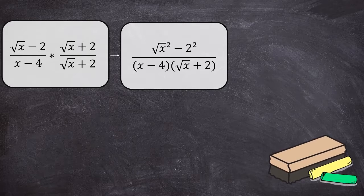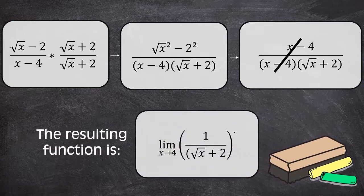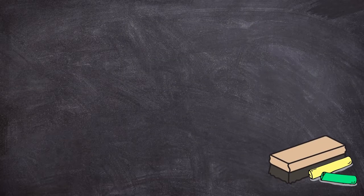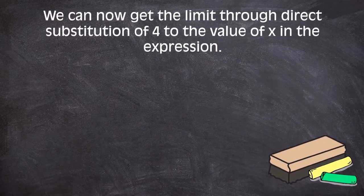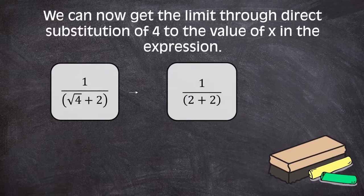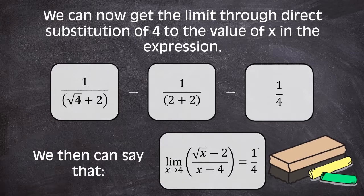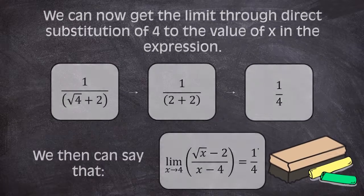This gives us the square root of x raised to 2 minus 2 squared, all over x minus 4 times the square root of x plus 2, is equal to x minus 4 over x minus 4 times the square root of x plus 2. From here, we can simply divide x minus 4 out of the fraction. This gives us the limit of 1 over the square root of x plus 2 as x approaches 4. We can now get the limit through direct substitution of 4 to the value of x in the expression. This obtains 1 over the square root of 4 plus 2, so 1 over 2 plus 2 is equal to 1 fourth. We then can say that the limit of the quantity of the square root of x minus 2 over x minus 4 as x approaches 4 is equal to 1 fourth.